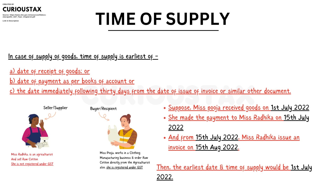The three criteria for goods are: first, the date of receipt of goods by the recipient; second, the date of payment as per the books of account; and third, the date of issue of invoice by the seller — whichever is 30 days after the invoice. The earliest of these three dates determines the month in which RCM is paid.